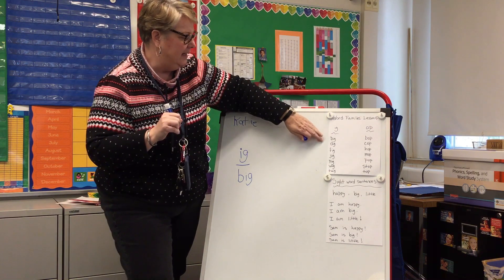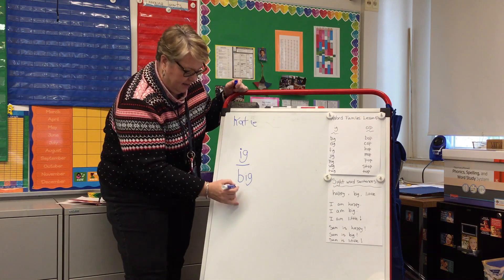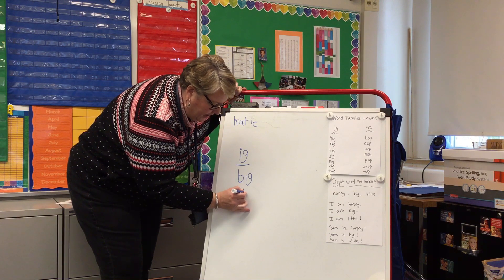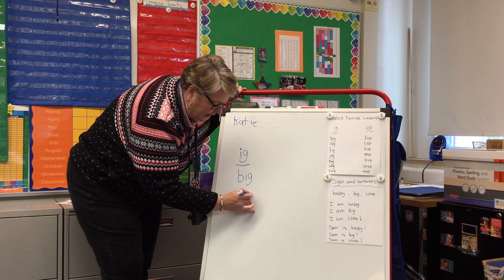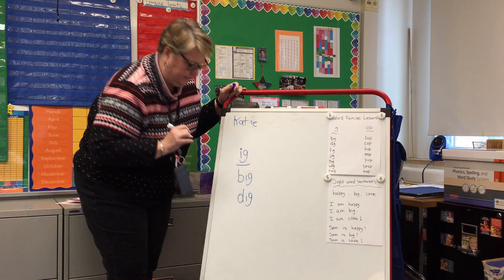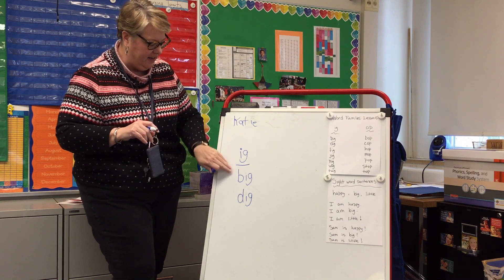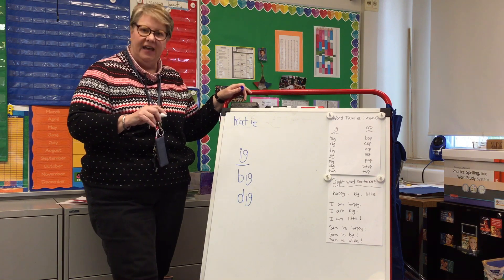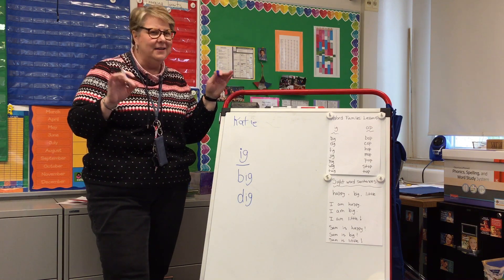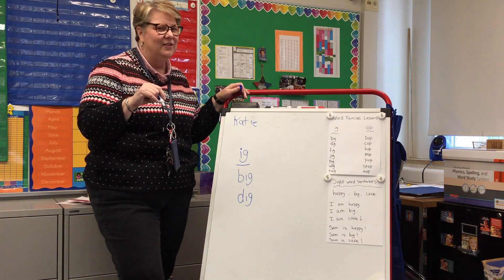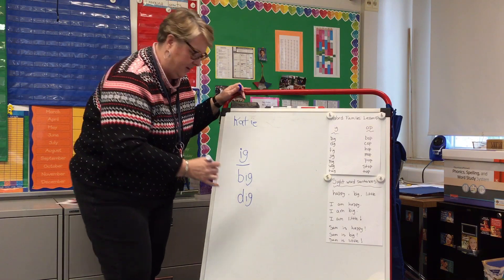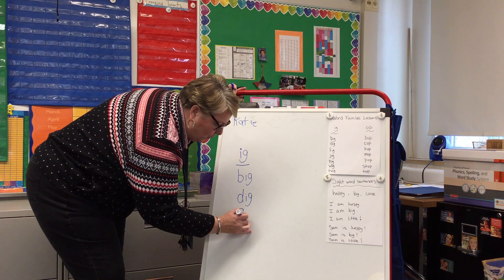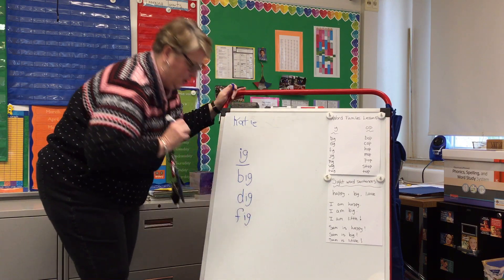The next one is 'dig' — D like dog, I like iguana, and G like goat. And the next one is 'fig.' You might have eaten those cookies called Fig Newton. It's F like fish, I like iguana, and G like goat.